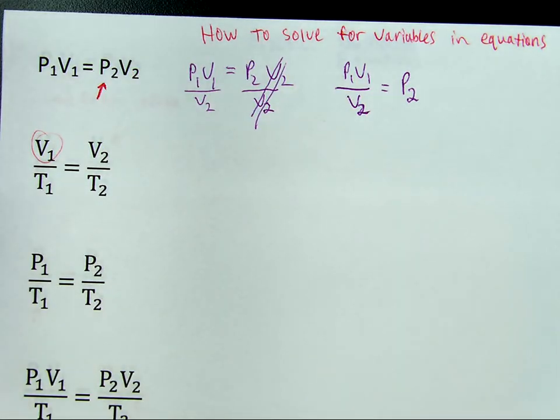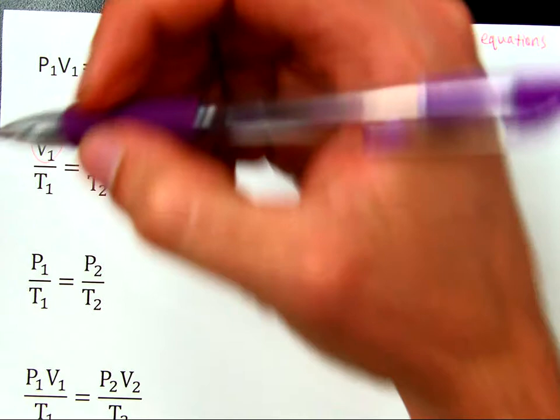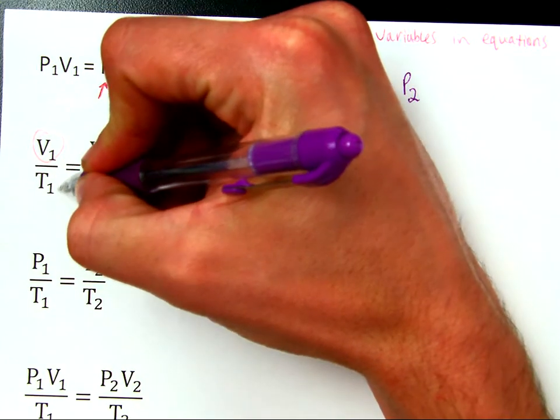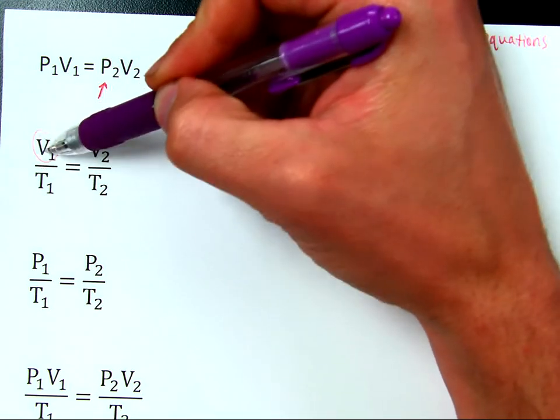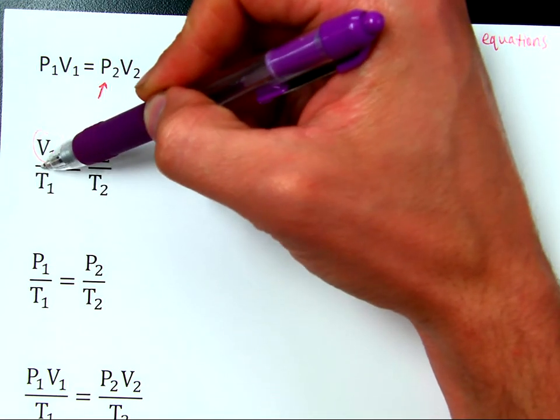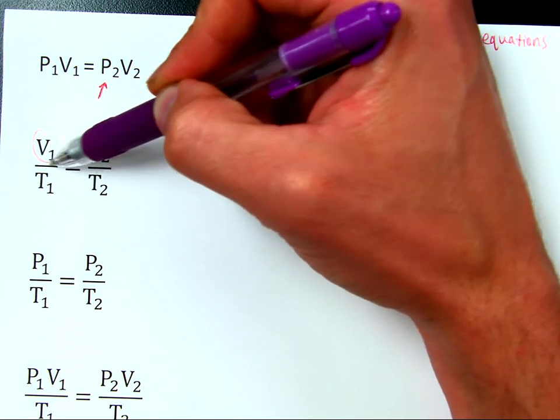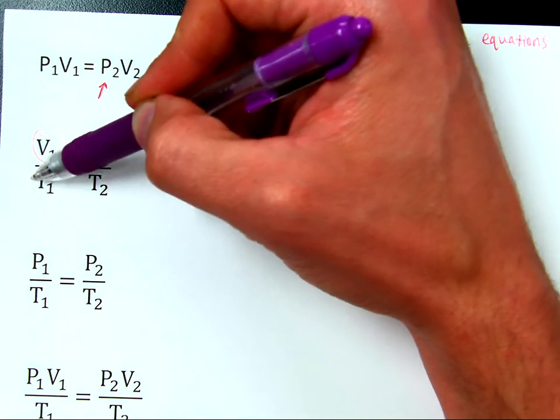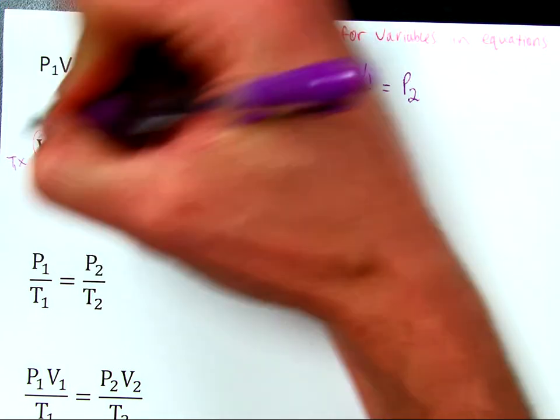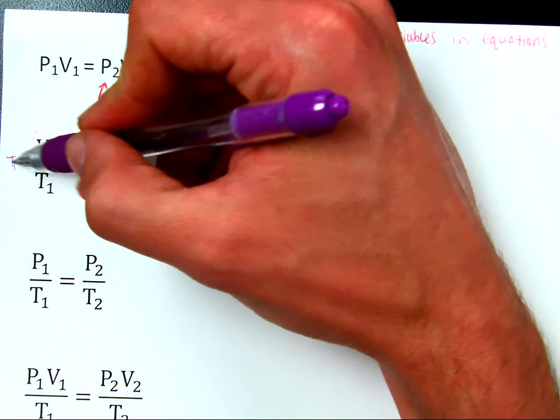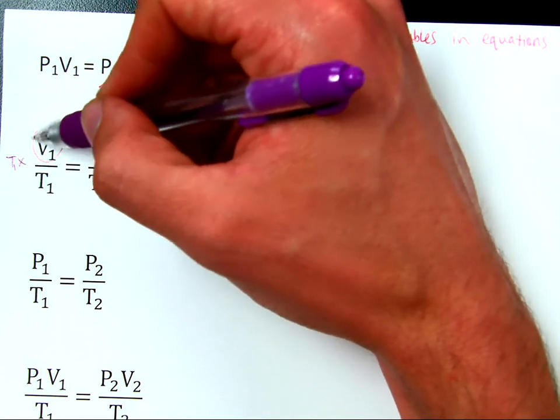Supposing you want to get that V1 by itself, you want to find volume 1. Well, what you do is, you need to get rid of this T1 right here. And the best way to do that is, we see that's volume 1 divided by temperature 1. So, I want to do the opposite of division. That means I'm going to multiply by this. So, T1 times that, I'm going to multiply both sides by T1 in order to make these cancel out. So, T1 goes away and this is by itself.